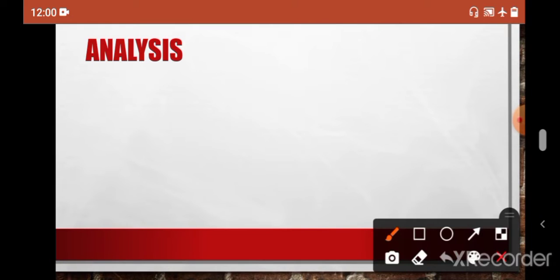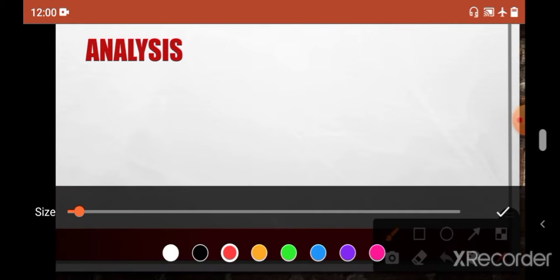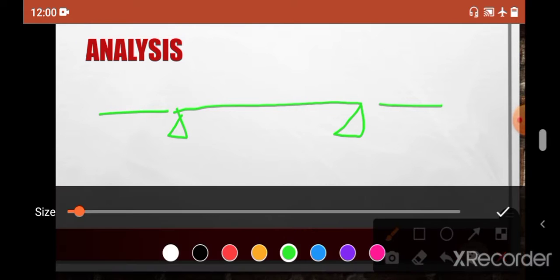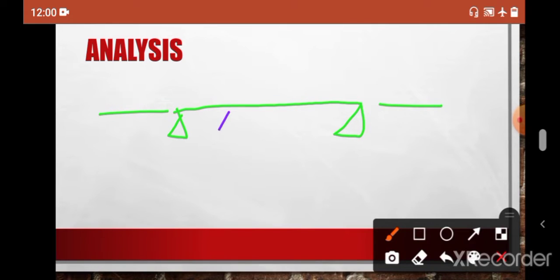We have already analyzed the right part and the left part. The remaining one is our middle one. These are internal hinges and these are actual supports. This was hinge and this is roller.